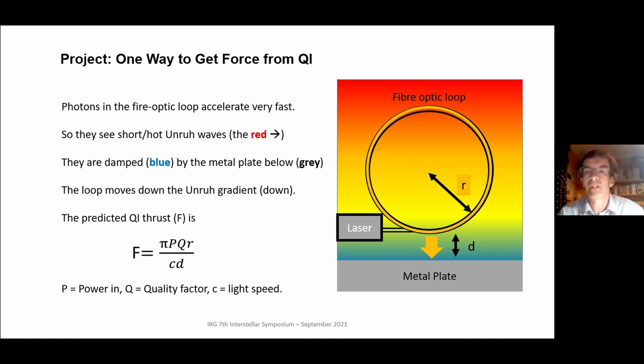So one way to get force from Quantized Inertia looks like this. The schematic on the right: we have a laser, we fire laser light into a fiber optic loop so it accelerates around the loop very fast, and the idea is that it should see short hot Unruh waves. I've shown that with the red. Then we put a metal plate beneath it, and this should damp the Unruh waves there. The loop should then try to move down the Unruh radiation gradient, so it should move down. The theory predicts the force should be F = πPQr/cd, where P is power in watts that you put into the laser, Q is the quality factor of the loop, which is the number of turns in the loop, r is the radius of the loop, and then divided by the speed of light times d, where d is the distance between the loop and the metal plate below it.